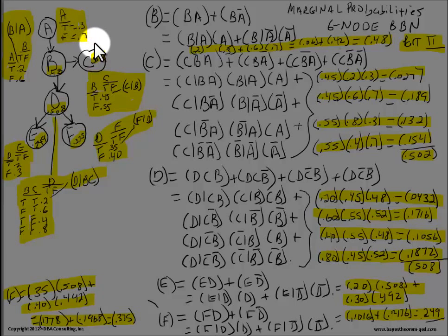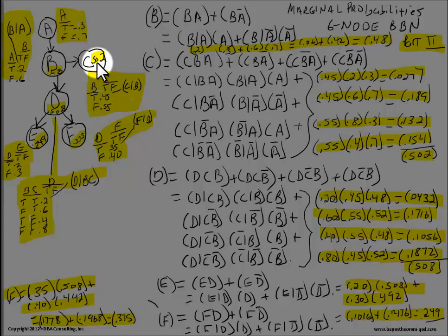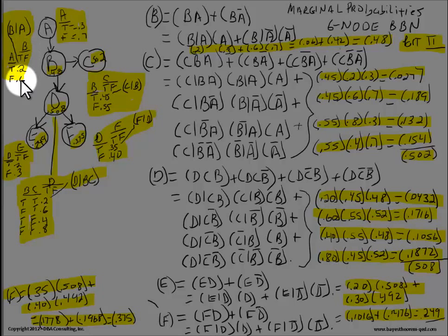The conditional probabilities for C consisted of: probability of C given B was 0.45, and probability of C given not-B was 0.55, so the marginal probability of C is 0.502, and this is what we're computing. For B given A, the probability of B given A is 0.2, and the probability of B given not-A is 0.6, and the marginal probability for B was 0.48.